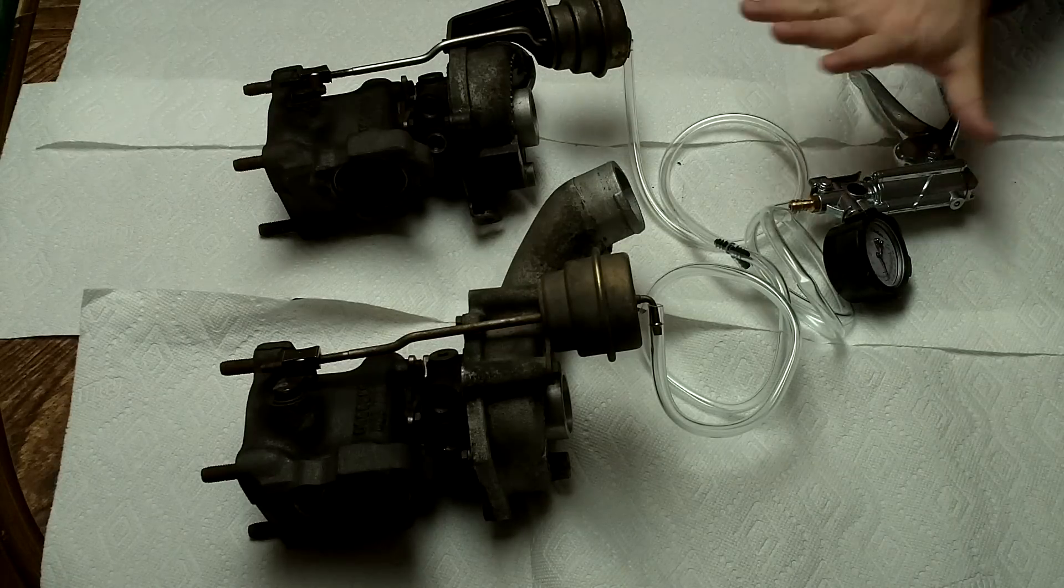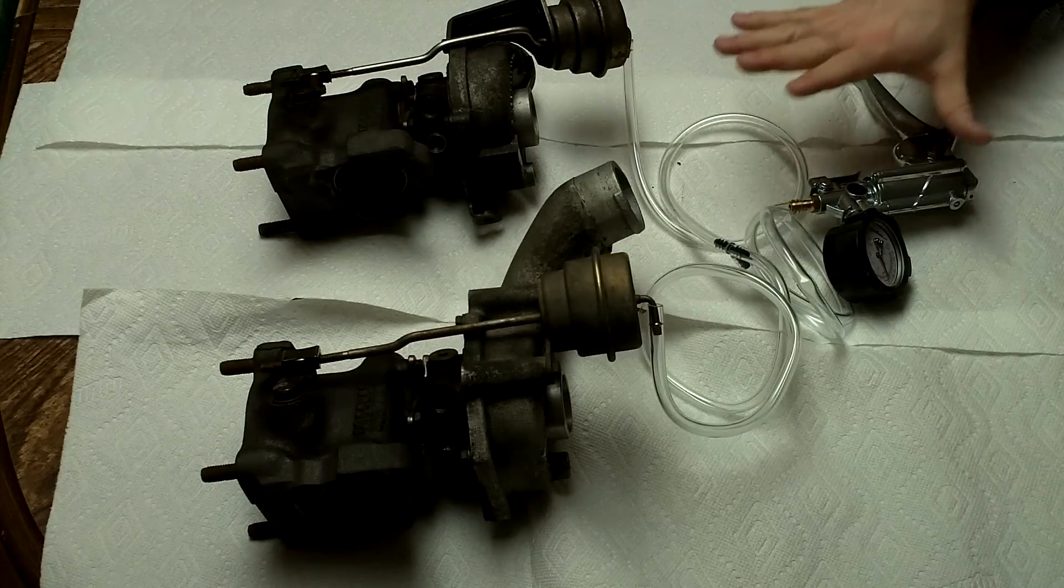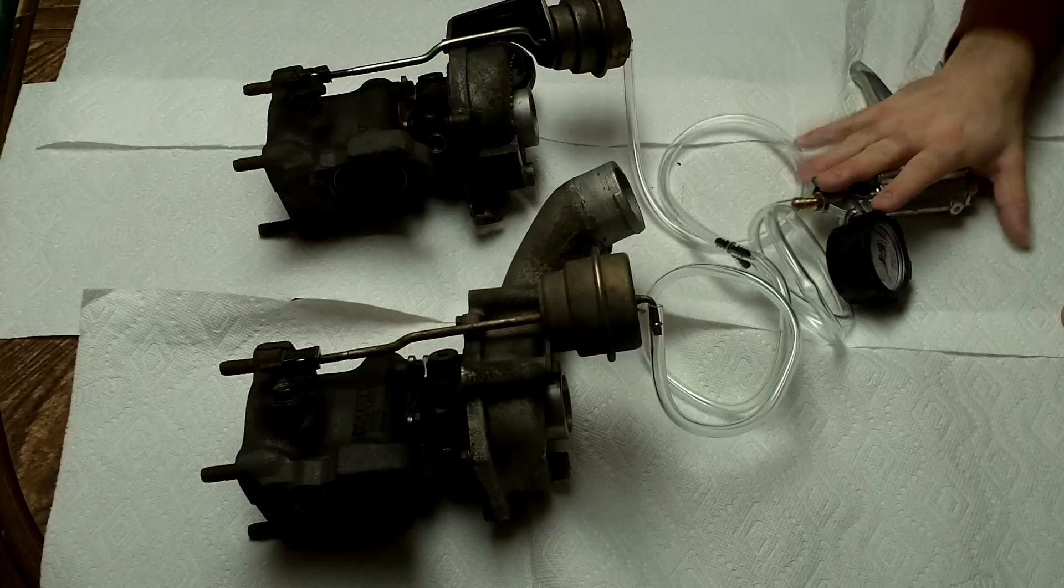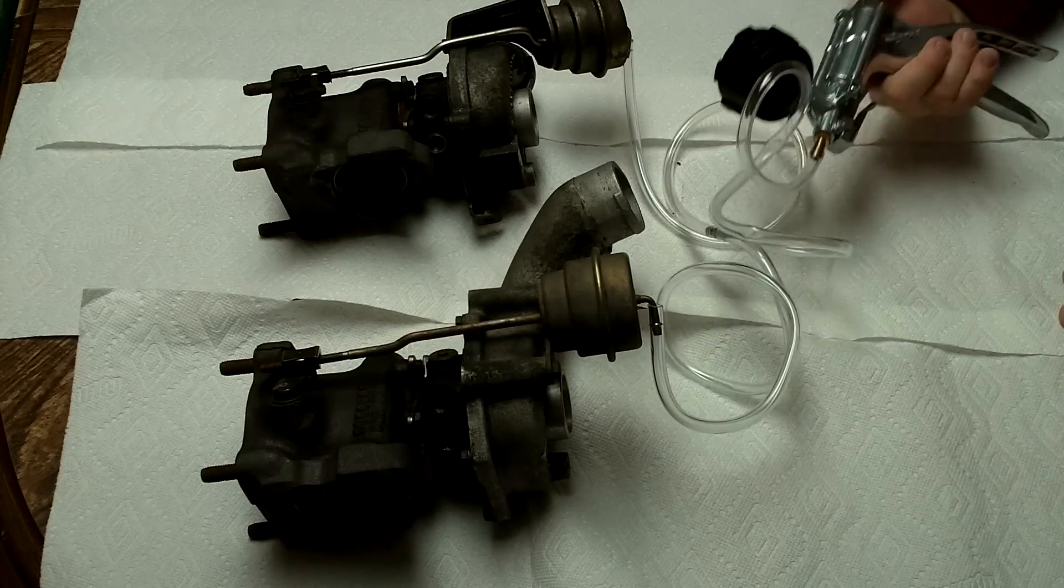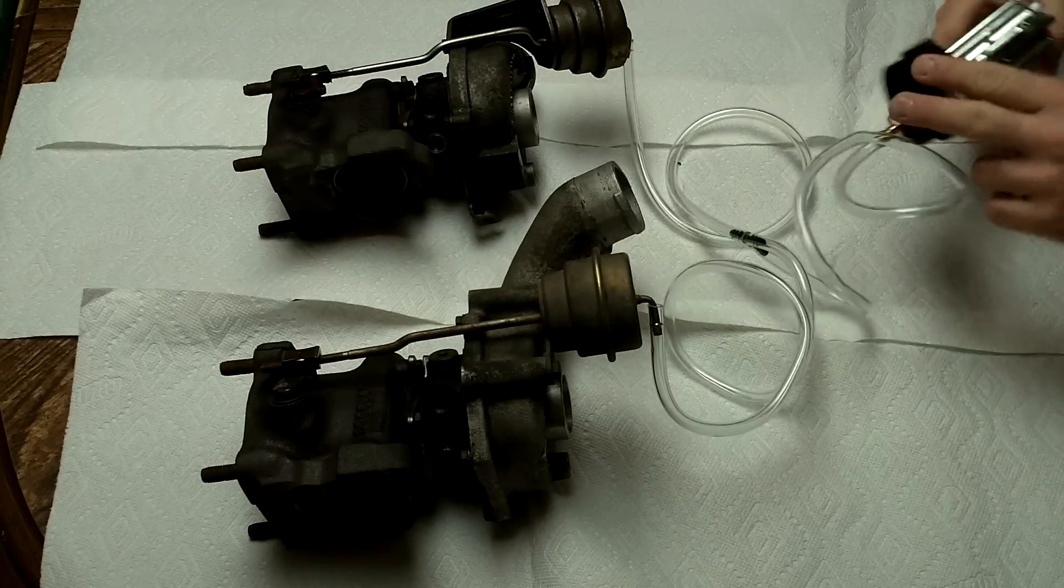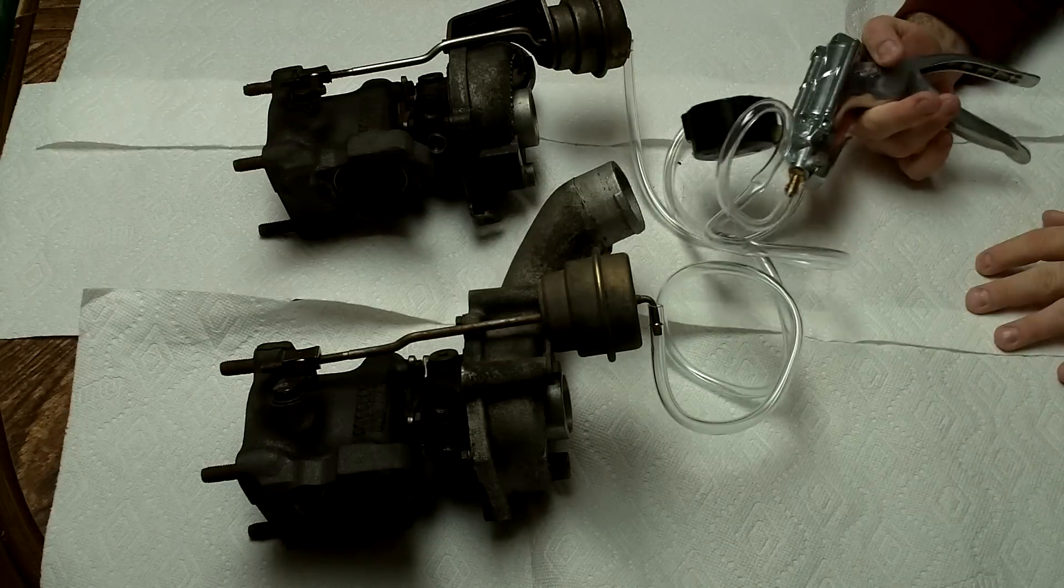So in order to test your waste gates manually what you need is something a little bit different. This model here is the MV8510 and not only can it do vacuum it can also do pressure.